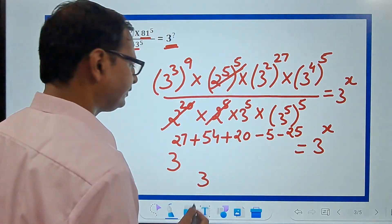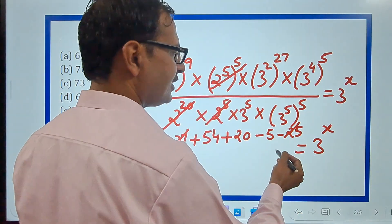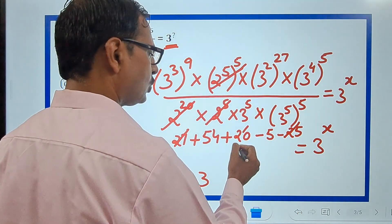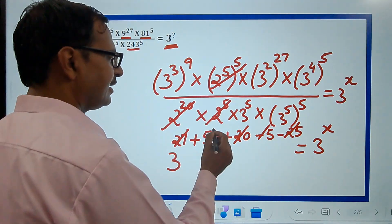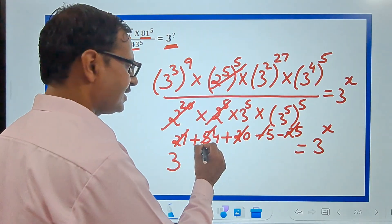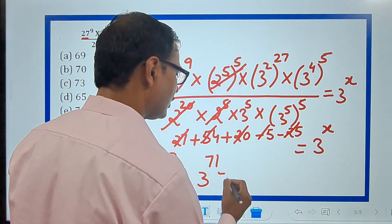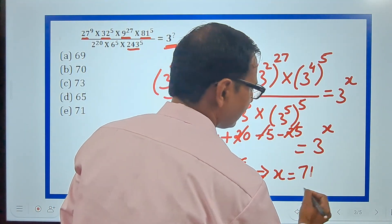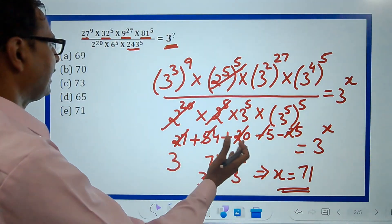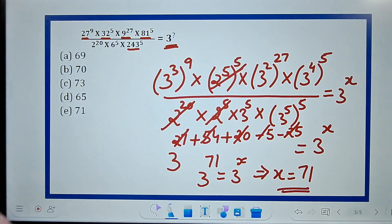3 raised to power: 27 minus 25 is 2, 22, 22 minus 5 is 17, 17 plus 54 is 71, and equals 3 raised to power x. The value of x comes out to be 71 because the base is the same. X equals 71, and here is your answer: E, 71.